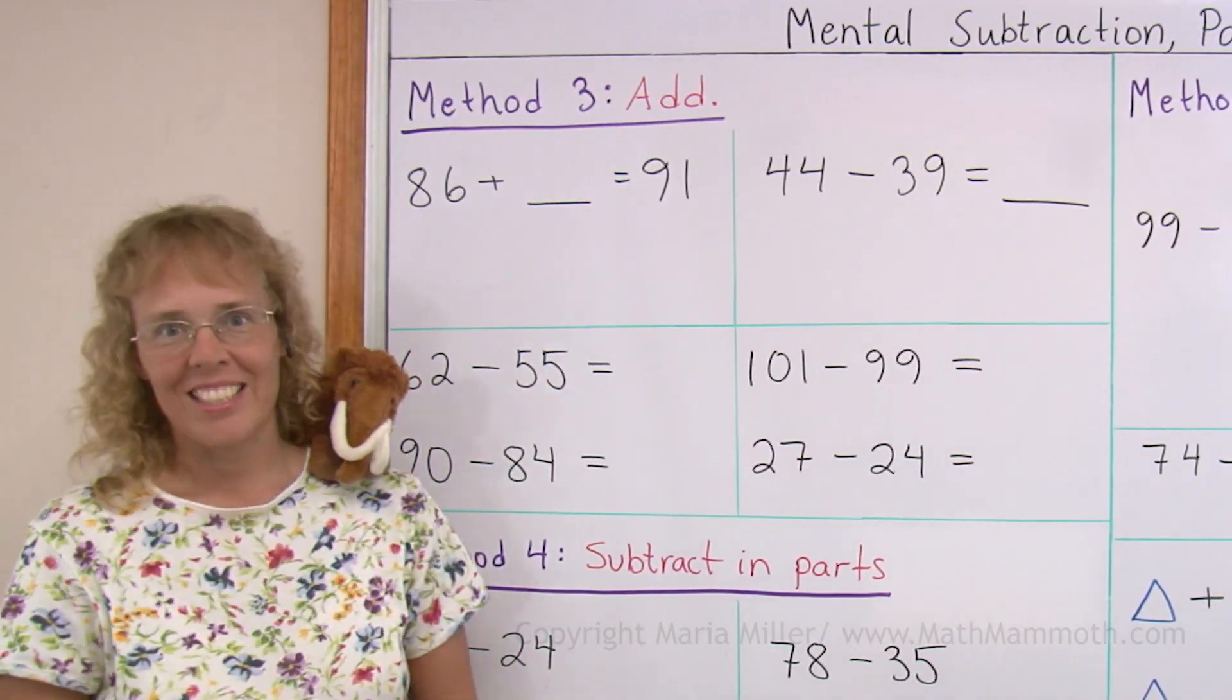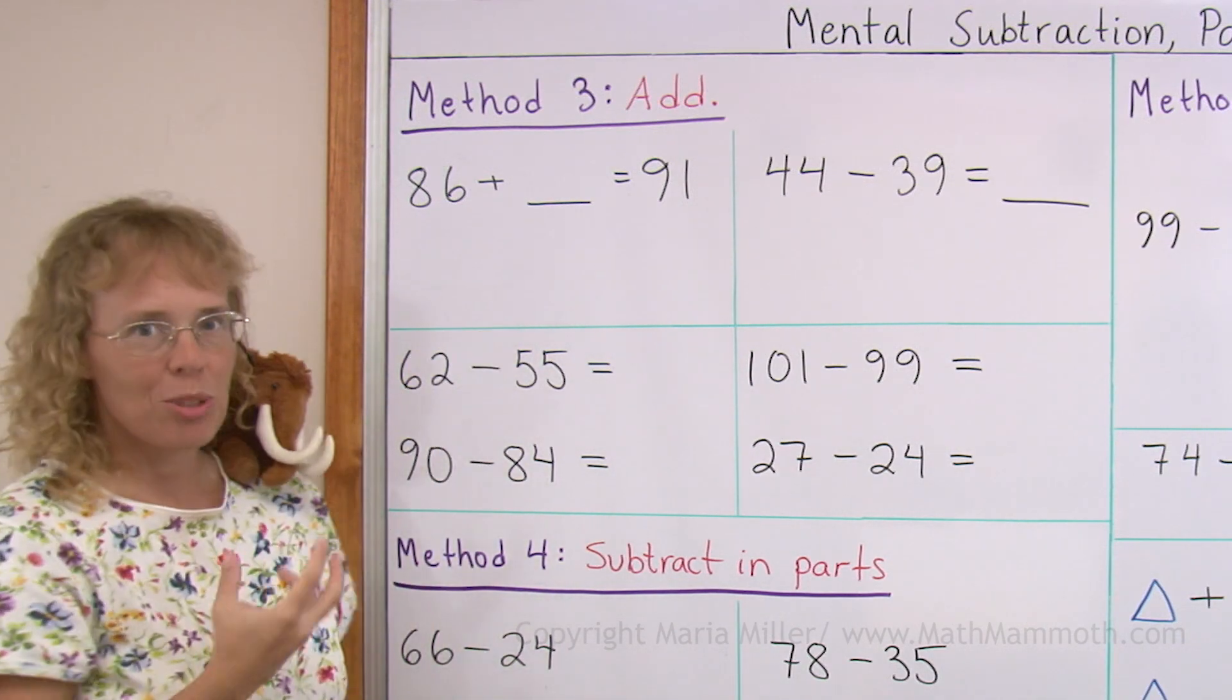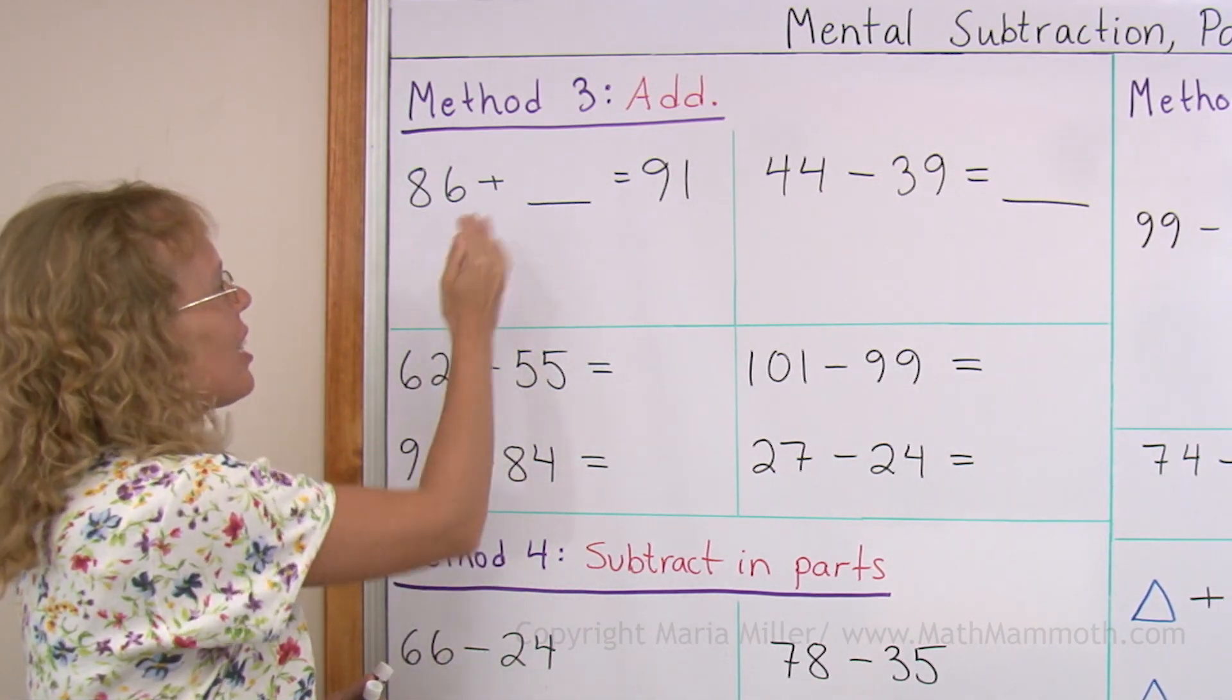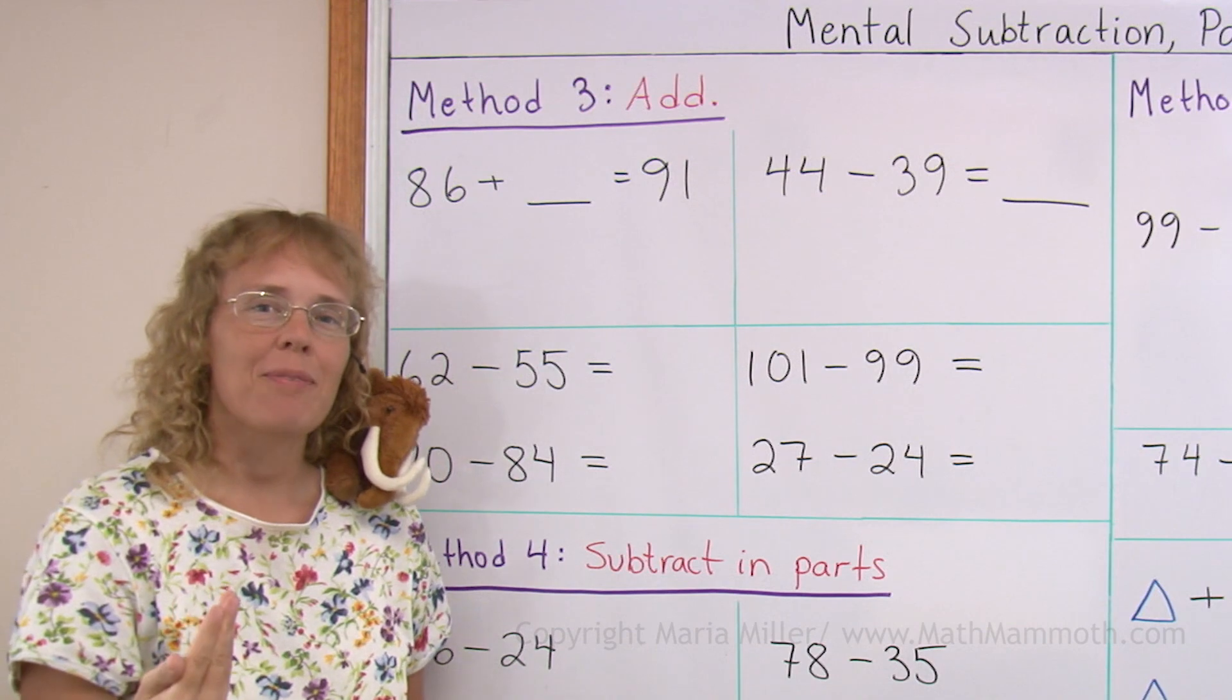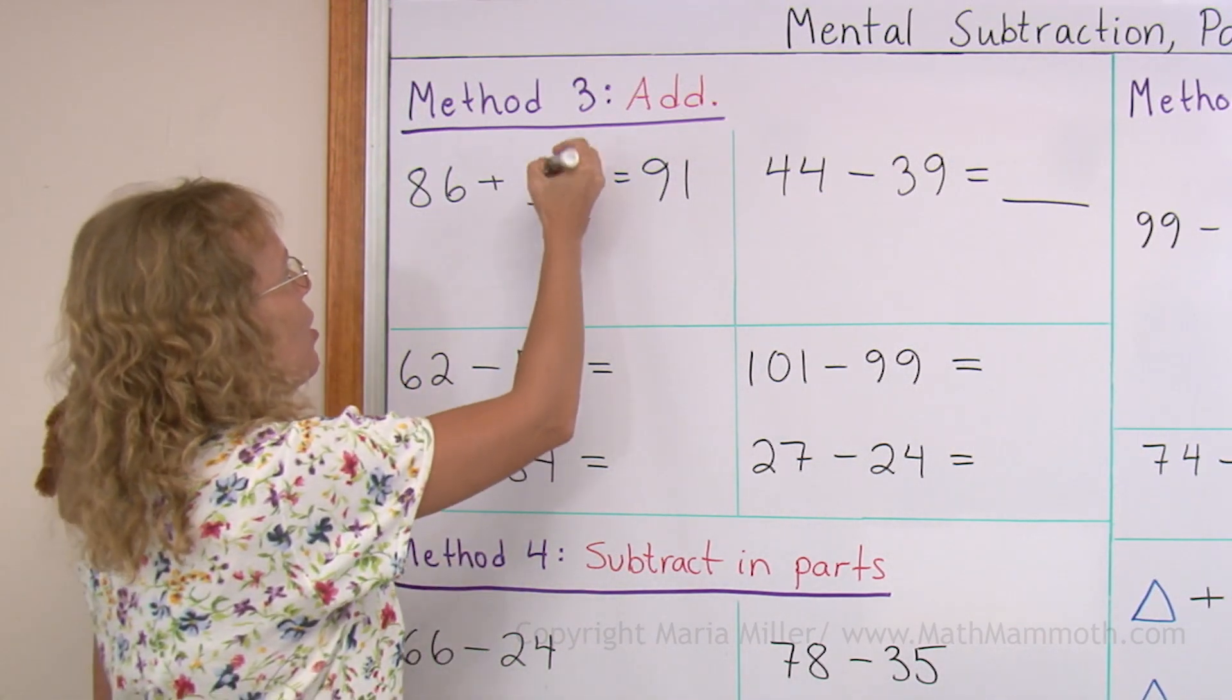First of all, we're going to add to subtract. And think of it this way. I have here an addition problem that I call a how many more addition. 86 plus how many more makes 91. I hope you can see the answer, know the answer, it is 5.